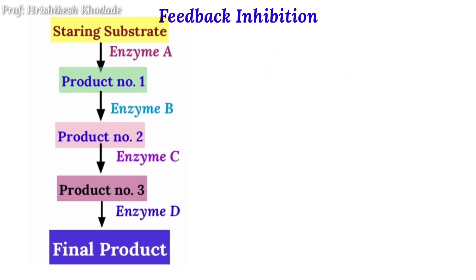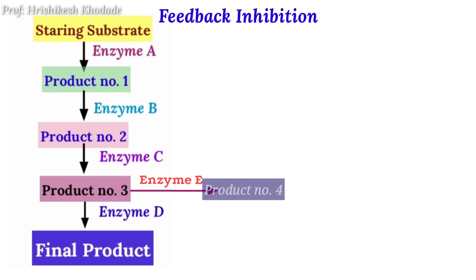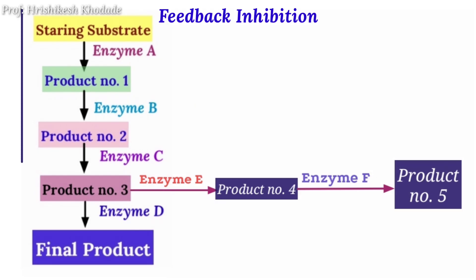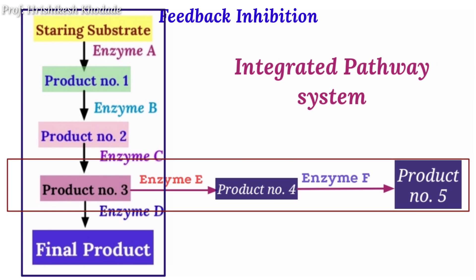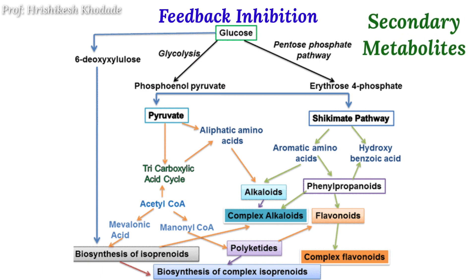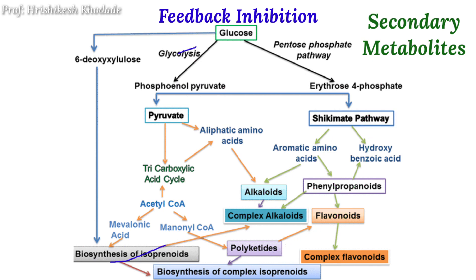For elaboration, product 3 can be a substrate for another enzyme, enzyme E, and by its action we get product 4. Product 4 can be a substrate for another enzyme, enzyme F, and we get product 5. This is nothing but the integrated pathway system, which is common for any cell. Here is a diagrammatic presentation of secondary metabolite synthesis in plants — the integrated pathway photograph shows how different pathways are combined with each other to produce products by an individual cell or plant body.